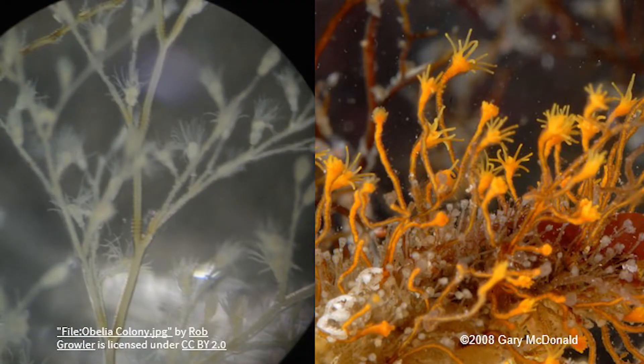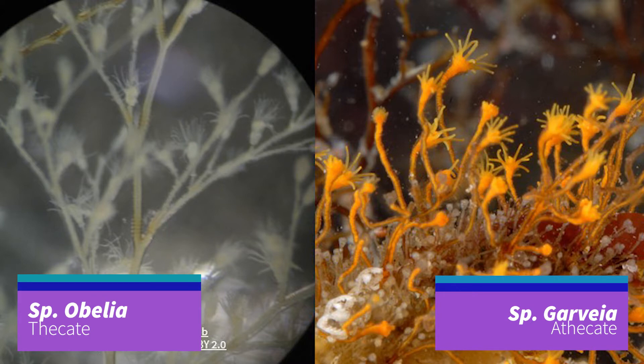Here are pictures of our two species in their natural habitats. On the left is Obelia and on the right is Garvea. Examine these photos and try to sketch what they look like, paying extra attention to the features we just talked about. Can you identify the two different zooids and the theca covering that characterizes Obelia?